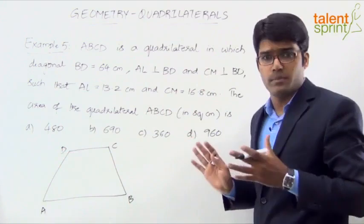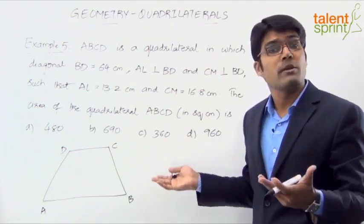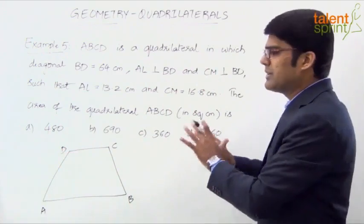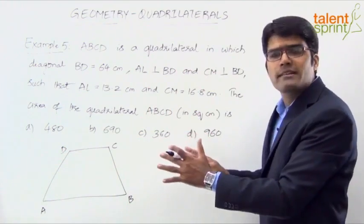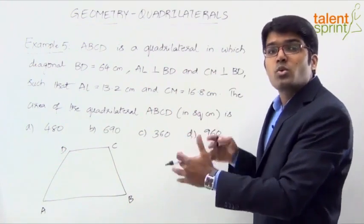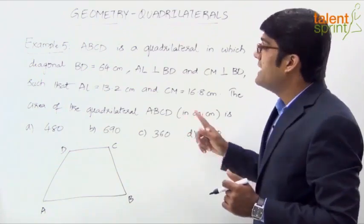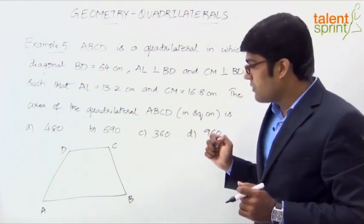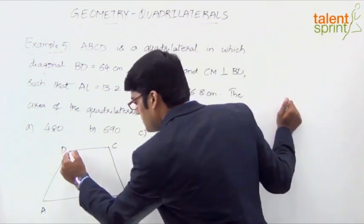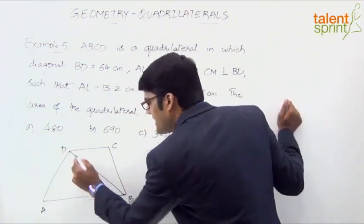You can also take a rectangle to keep it simple or parallelogram to keep it simple, but I am just trying to take a kind of trapezium or a random quadrilateral so that you know how to approach even with a random figure for such ones. Now BD is the diagonal and the length is 64, so let us construct the diagonal here. BD. The length is given as 64.